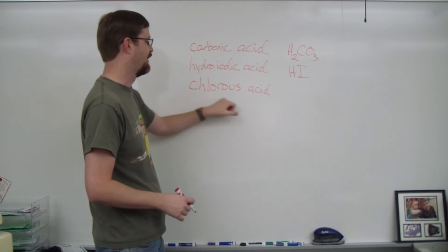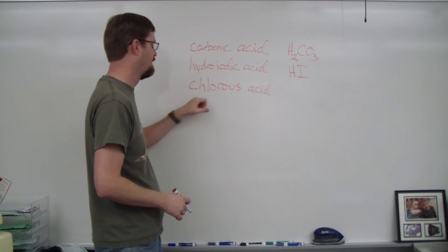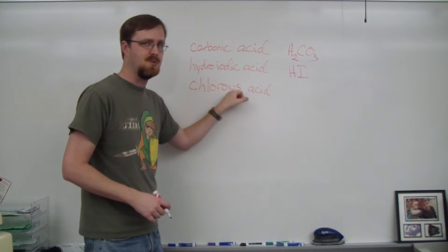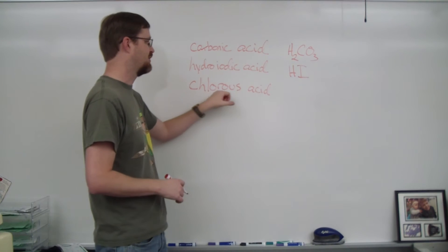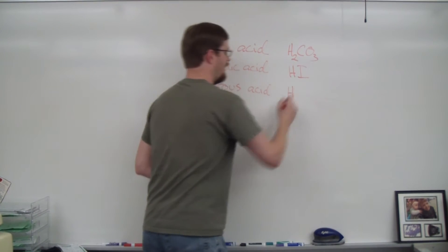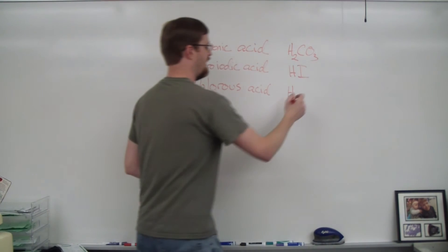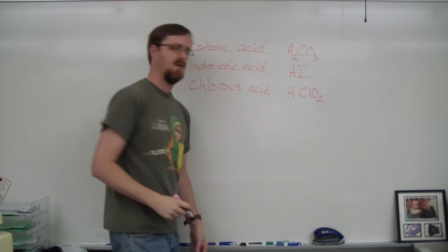Last example here. Chlorous acid. So no hydro. So that means it's a polyatomic ion. It ends in OUS, which means this is an ite polyatomic ion. So this is chlorite acid. So we start with hydrogen. We have chlorite, which is ClO2.